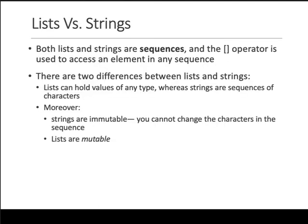So both lists and strings are sequences of items or characters. In strings it's single characters; in lists it can be anything. Both use the square bracket operator. The only difference, or like the couple of differences between lists and strings: list can hold any type, whereas string will hold only characters.